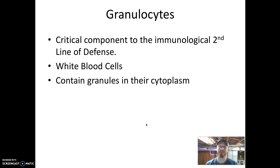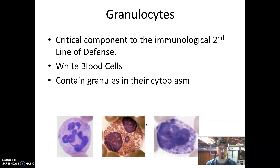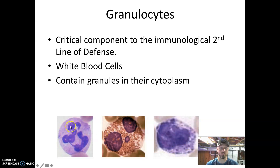Granulocytes have their name because they contain granules in their cytoplasm. Here are three microscopic images of different types of granulocytes. Especially in the middle cell you can see dark granules speckled throughout the cytoplasm. The far right cell and far left cell also have these dark dots, just a little harder to see in the left one.